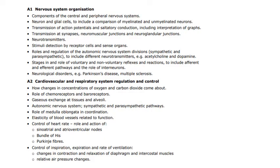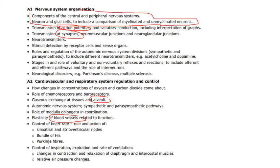This is Section A in a bit more detail. There are quite a few things we have already started to look at. We've looked a little bit about blood vessels, the alveoli and their structures and tissues, action potentials, and synapses. What we're going to do today is go through the first two parts: the central and the peripheral nervous systems, and the role of the neuron and the glial cells.